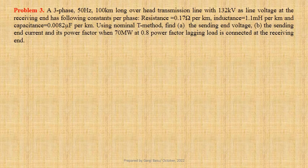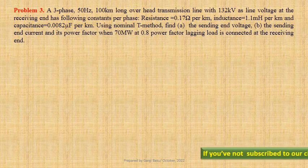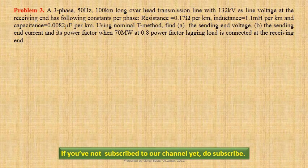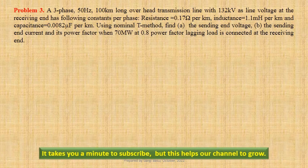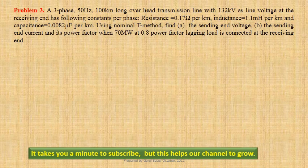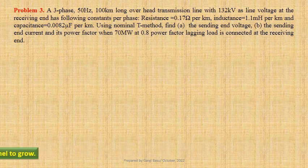A three-phase 50-hertz 100-kilometer long overhead transmission line with 132 kilovolts as line voltage at the receiving end has the following constants per phase: resistance equals 0.17 ohm per kilometer, inductance equals 1.1 mH per kilometer, and capacitance equals 0.0082 microfarad per kilometer. Using the nominal T-method, we have to determine the sending-end voltage, sending-end current, and its power factor when 70 MW at 0.8 power factor lagging load is connected at the receiving end.